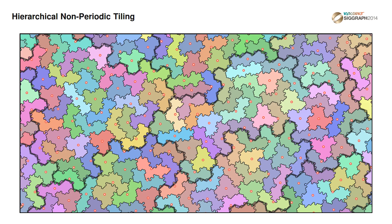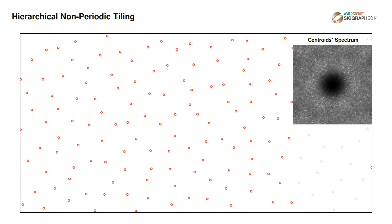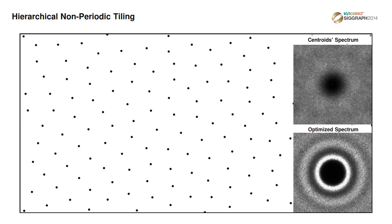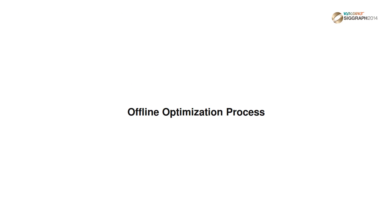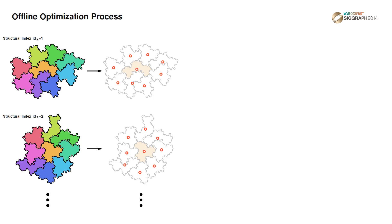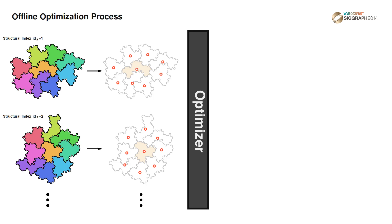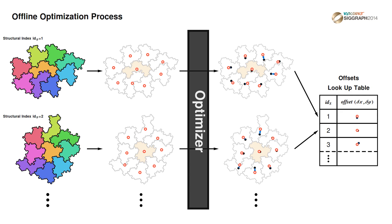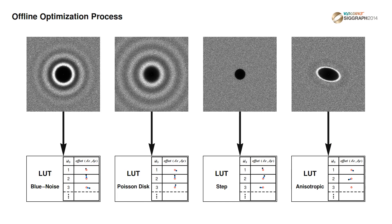Tile centroids are used as sampling point bases. This centroid distribution has a spectrum free of spurious peaks. To match this distribution to a user-specified target spectrum, we calculate an offset that adjusts the position of each sampling point. These offsets are computed using an offline optimization process. We optimize sample locations based on the local arrangement of irregular trihexes. From each irregular trihex in our library and their possible neighbors, we generate a collection of patches characterized by unique structural indices. Each patch contains a set of tile centroids to be optimized, after which the offset between the basis position and the optimized one is stored in a lookup table sorted by structural indices. There is one such lookup table per target spectrum optimization.